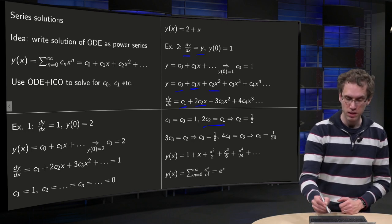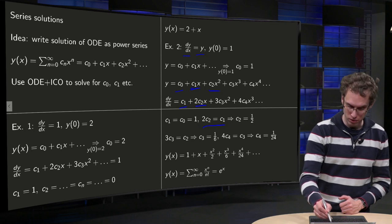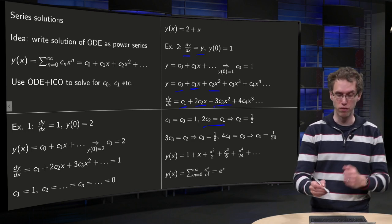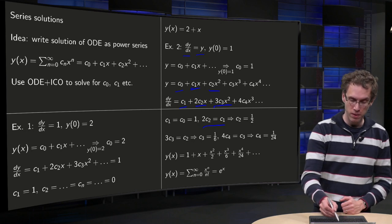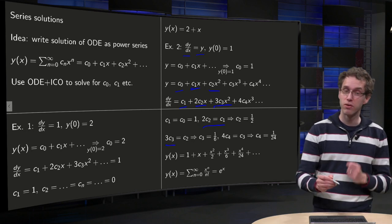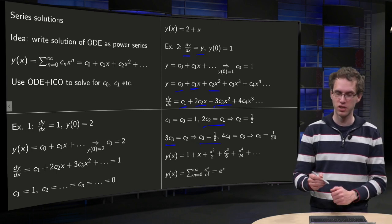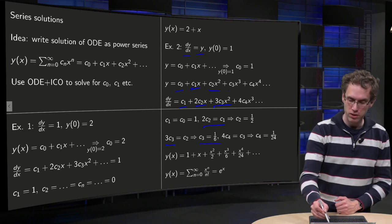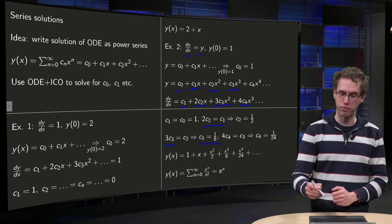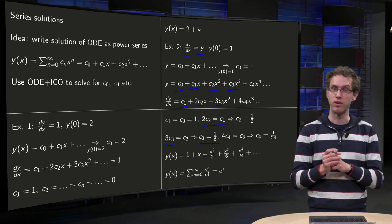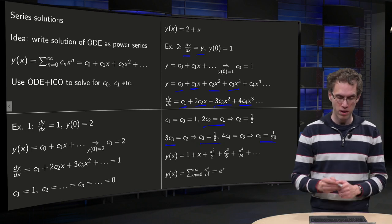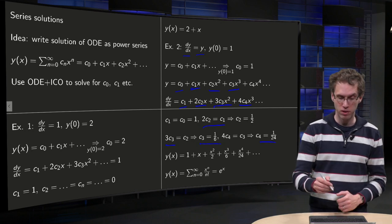Then c2 equals 3 times c3, so that allows us to solve for c3, because 3 times c3 equals c2 equals 1/2, so c3 equals 1 over 6. And we go on, c3 equals 4 times c4, so c4 equals 1 over 4 times c3 equals 1 over 24.